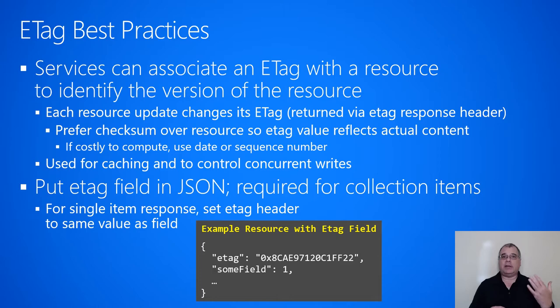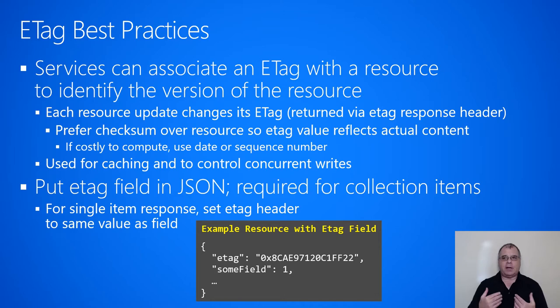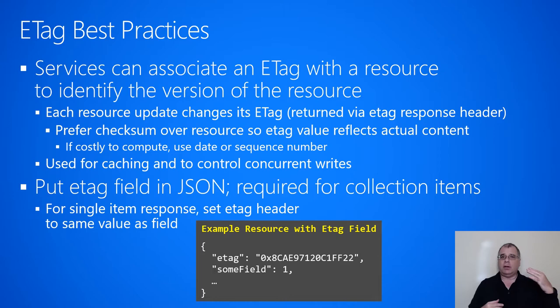This eTag is used for caching purposes — to conditionally read a resource only if it has changed — or to control concurrent writes, meaning only update a resource if it hasn't changed. You should include the eTag not only in the response header, but also include an eTag field in the JSON as well, if you want to support these conditional access patterns. The reason it's important to put the eTag field in the JSON response is because if a customer goes to a collection and does a GET operation returning multiple resources, the client-side code will want to know the version of each of those.